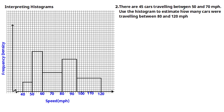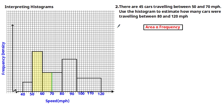The next problem tells us there are 45 cars traveling between 50 and 70 miles per hour, and asks us to use the histogram to estimate how many cars were traveling between 80 and 120 mph. The 50-to-70 region is shaded on the histogram. Notice again the frequency density axis has no scale, but we can use the fact that area is directly proportional to frequency to approach this.